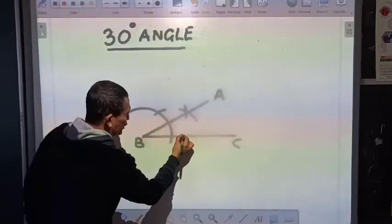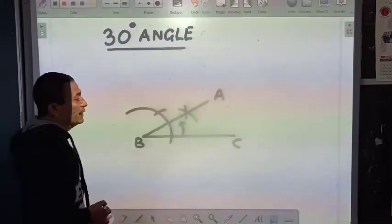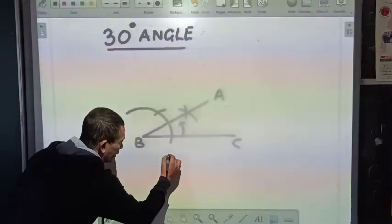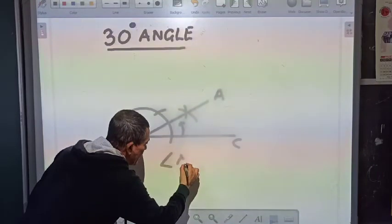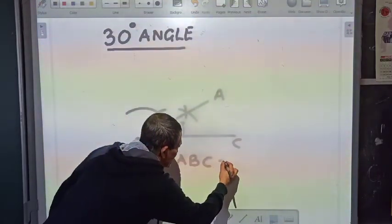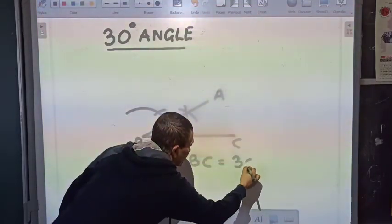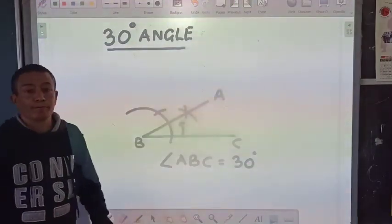That is from here to here, this will be 30 degrees. So I can write down angle A, B, C is equal to 30 degrees. So let's go ahead and do that.